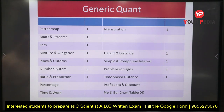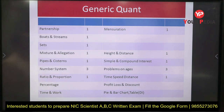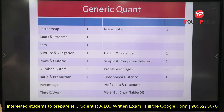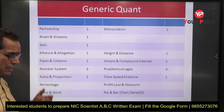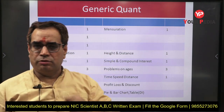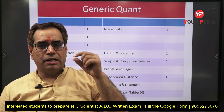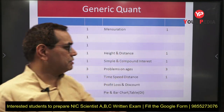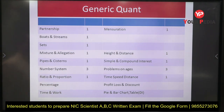Now let us look at the pattern of the 2022 paper for generic quant — the topics from which questions were asked. There was one question from partnership, one from boats and streams (a simple formula-based question), one from sets (e.g., 100 students, 40 like cricket, 30 like football, 20 like both — how many like only cricket), and one from mixture and allegation, plus one from pipes and cistern.